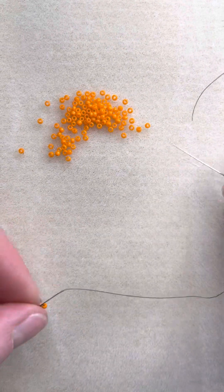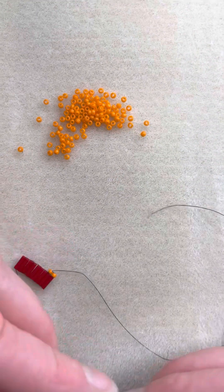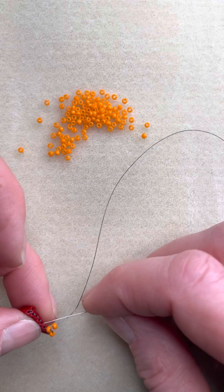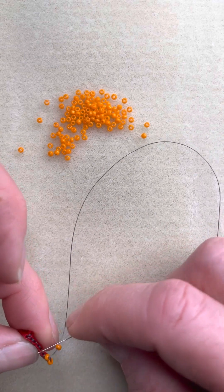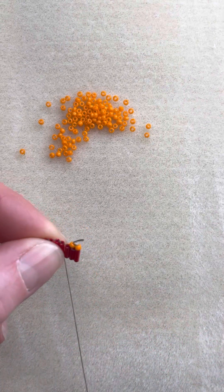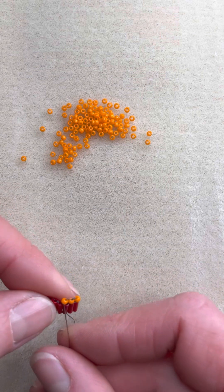So now we add another bead. Now we're going to just one bead at a time and one bridge at a time. So we add one bead, pull it all the way down, and then we go through the next bridge which is the third bridge. We go under that bridge and then we go up through that third bead.